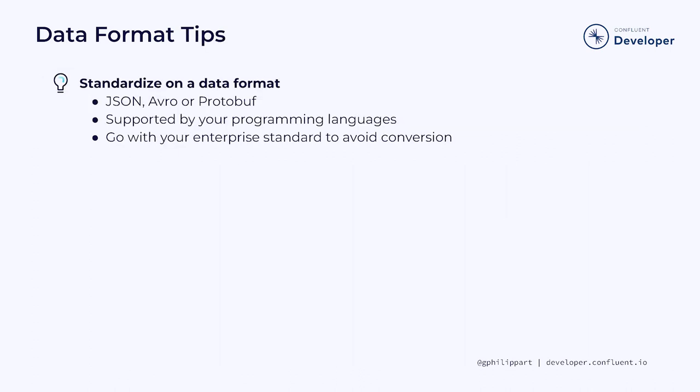Our first tip on data format is that you should standardize on a data format. There are multiple options when it comes to choosing a data serialization format: JSON, Avro, and Protobuf. Pick one that is well supported by your different programming languages. Be careful not to choose a format at odds with your enterprise data exchange standard — otherwise, you'll have to build conversion layers at every system boundary.